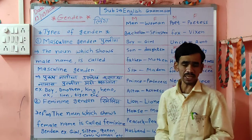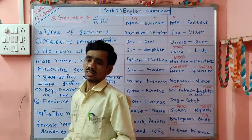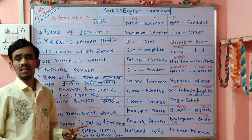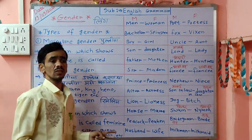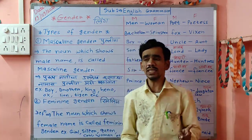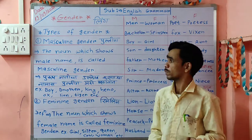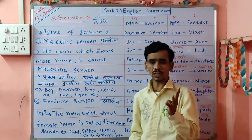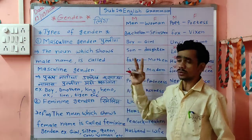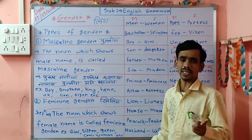The first one is Masculine gender, which in Marathi is Pulling lingam. The second one is Feminine gender. The third one is Common gender, which is Samarna lingam. And the fourth one is Neuter gender, which means Napunsak lingam. Today we are going to see 2 types only, and tomorrow we will see the remaining 2 types.